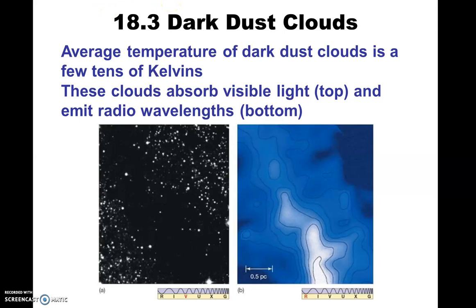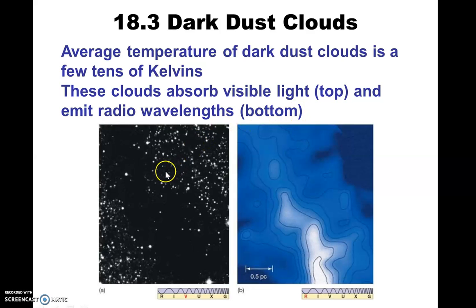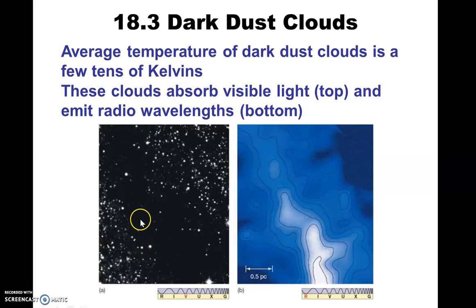Now we're going to turn to the darker clouds that we see. You can see there are some darker regions even near the emission nebula like the Orion Nebula. There are other regions where you just look out, see a bunch of stars, and then you don't see any stars at all behind it. These are the dark regions.